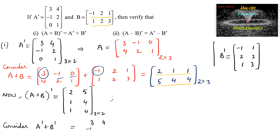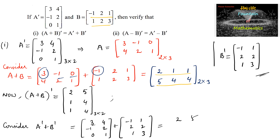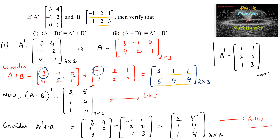Now consider A transpose plus B transpose. A transpose is [3, 4; -1, 2; 0, 1] as given, and B transpose is [-1, 1; 2, 2; 1, 3]. Adding corresponding elements: 3 + (-1) = 2, 4 + 1 = 5, -1 + 2 = 1, 2 + 2 = 4, 0 + 1 = 1, 1 + 3 = 4. Result is [2, 5; 1, 4; 1, 4], order 3×2. We observe that (A+B)^T on the LHS and A^T + B^T on the RHS are identical. Therefore (A+B)^T = A^T + B^T.